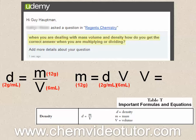And what if you had to solve for the volume? What combination of 12 and 2 would get you an answer of 6? Correct, 12 over 2, or mass divided by density, with the grams canceling each other out, leaving you with milliliters.